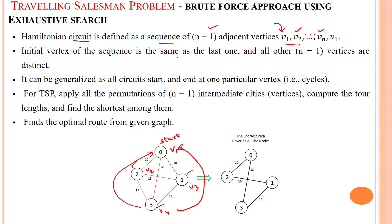So here the initial vertex and also last vertex both are same because he has to start from the starting point and return back to the starting point. All other n minus 1 vertices are distinct. Then it can be generalized as all circuits which start and end at one particular vertex.